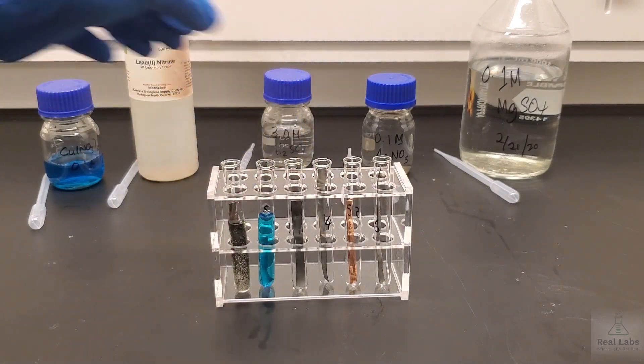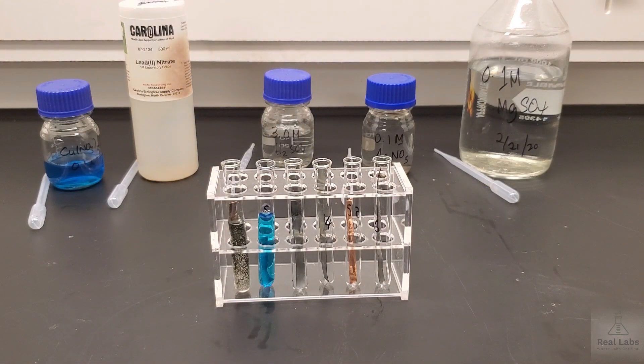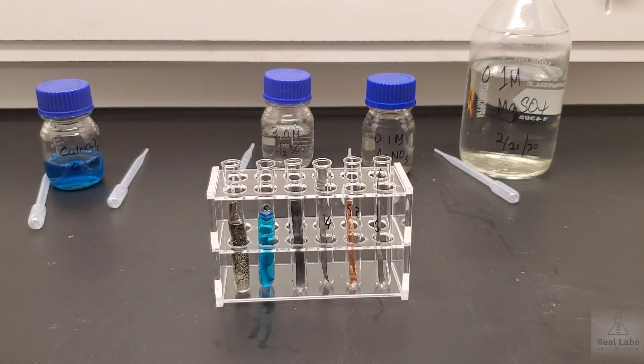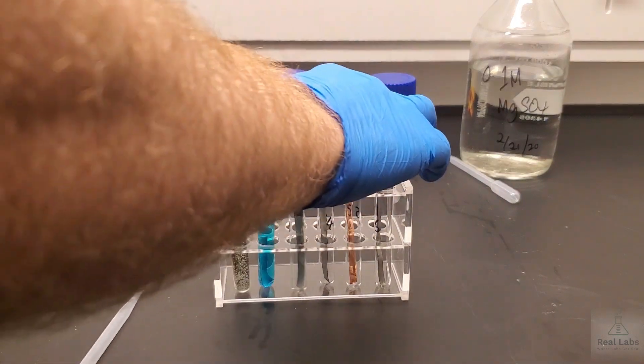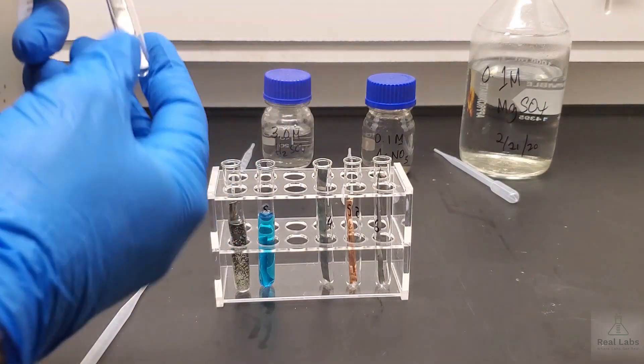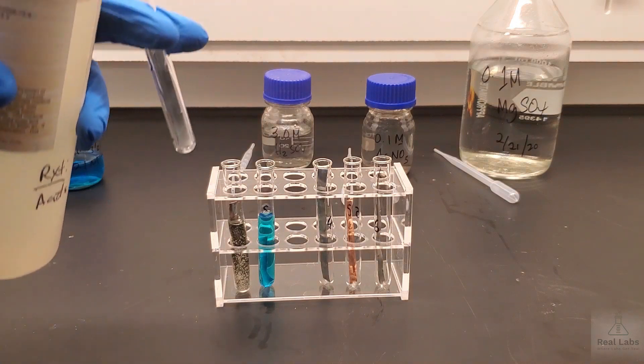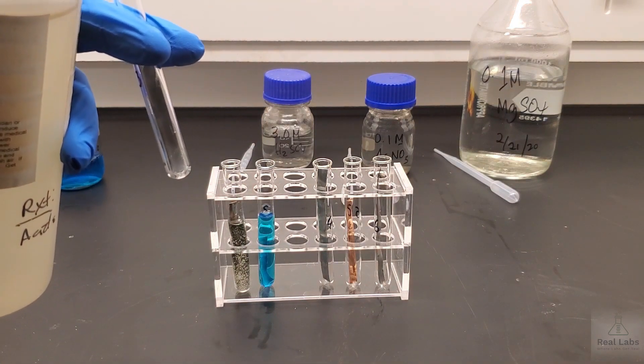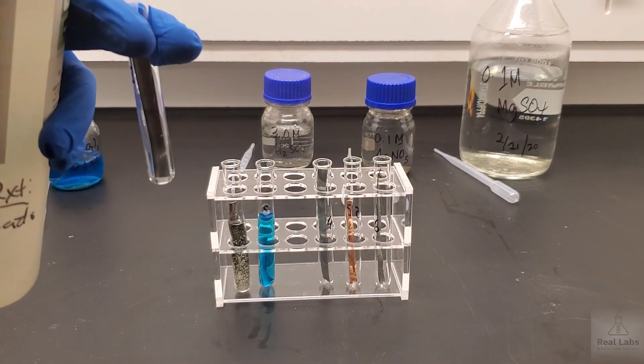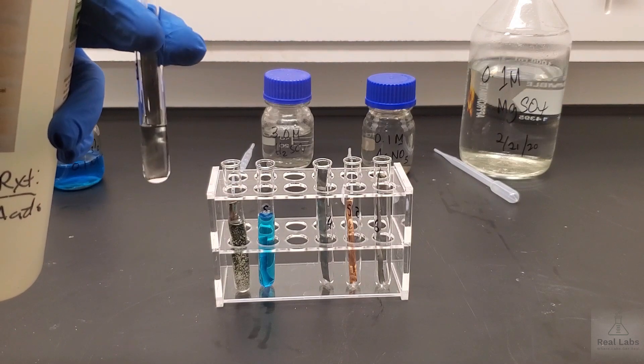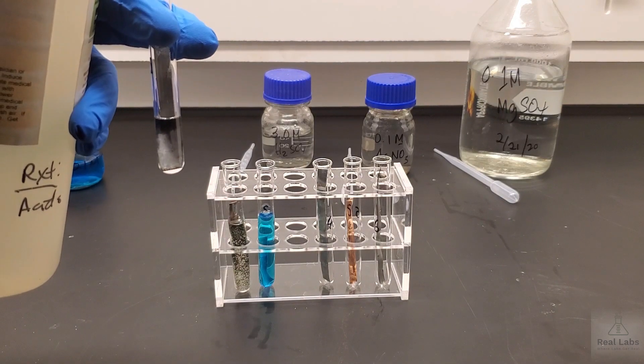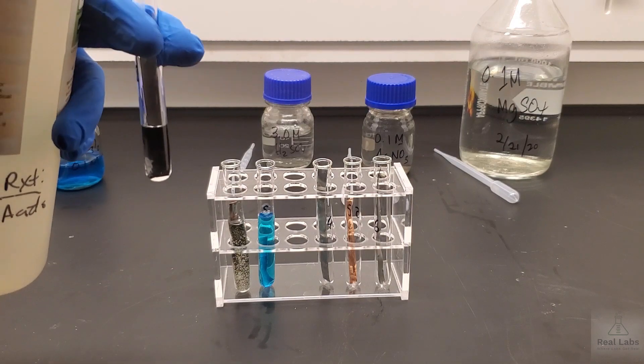In this third test tube here, we have the zinc strip. We're going to add lead nitrate to it. So here's our lead nitrate. We can see if anything will happen here when we add the lead nitrate. It's a fairly shiny piece at the bottom, a little bit dirty on top, but the bottom we can look at quite clearly. That's nicely cleaned.